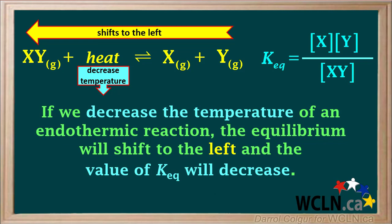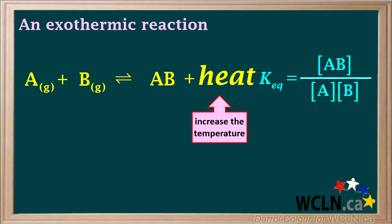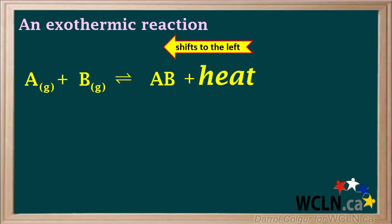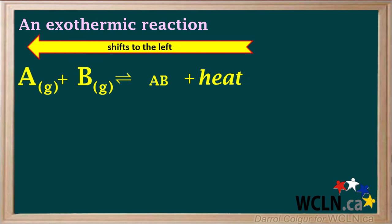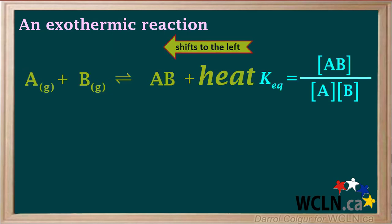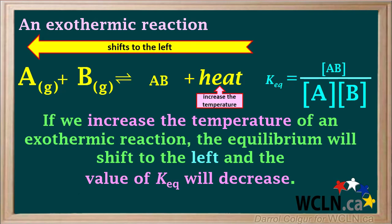Now consider an exothermic reaction: A + B ⇌ AB + heat. If we increase the temperature, heat is added as a stress. The equilibrium shifts to the left — concentrations of reactants increase, concentration of product decreases, and excess heat is used up. As it shifts left, the ratio of product to reactant concentrations decreases, and the value of KEQ decreases. So increasing the temperature of an exothermic reaction shifts equilibrium to the left, away from the heat term, and both the ratio of products to reactants and KEQ decrease.